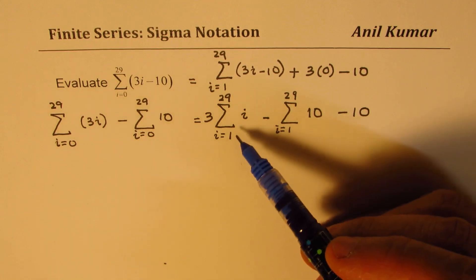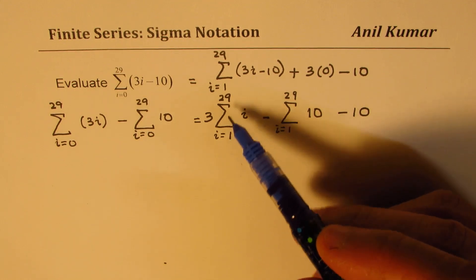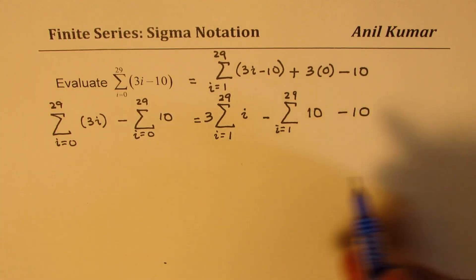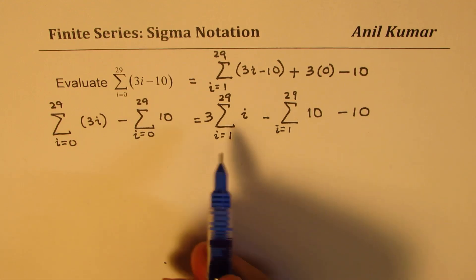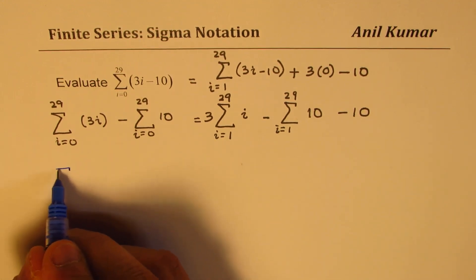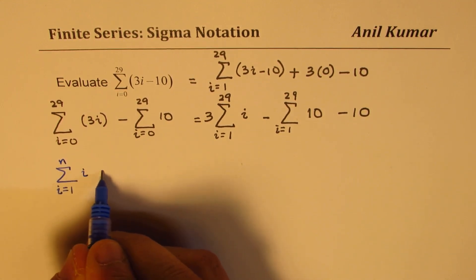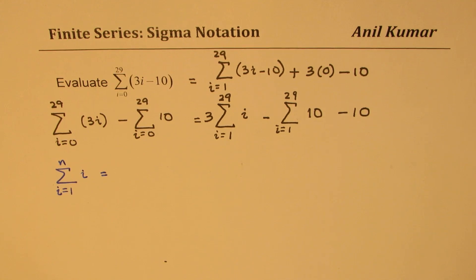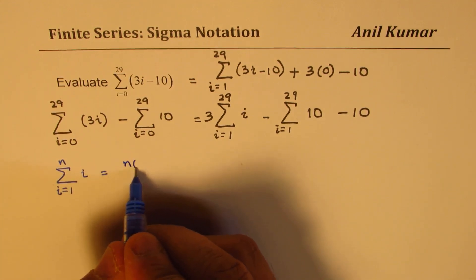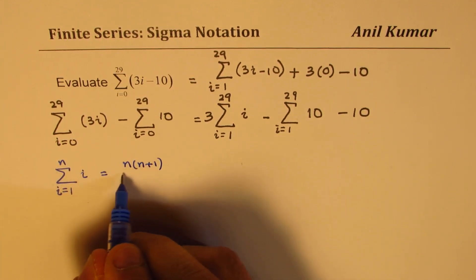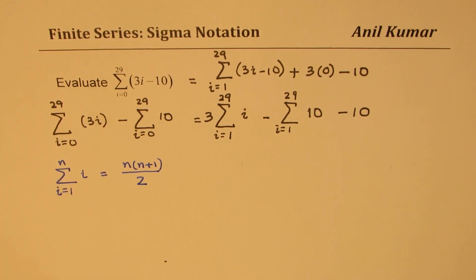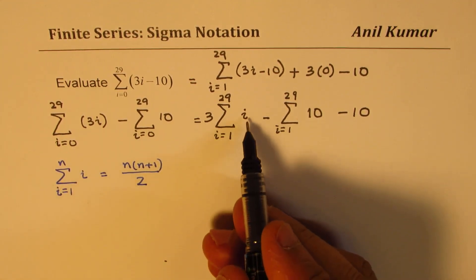Now you know, what is sum of natural numbers? The formula for sum of natural numbers is known to you. Let me rewrite the formula here. So we know that sum of natural numbers, when i equals to 1 to n, for i, is given as n times n plus 1 over 2. So we are going to use this particular formula here.